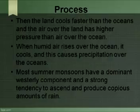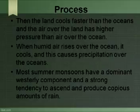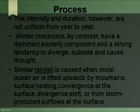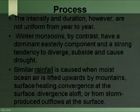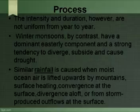Most summer monsoons have a dominant westerly component and a strong tendency to ascend and produce copious amounts of rain because of the condensation of water vapor in the rising air. The intensity and duration, however, are not uniform from year to year. Winter monsoons, by contrast, have a dominant easterly component and a strong tendency to diverge, subside, and cause drought.